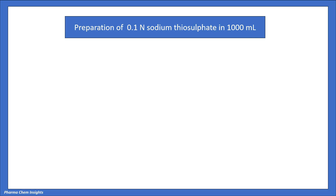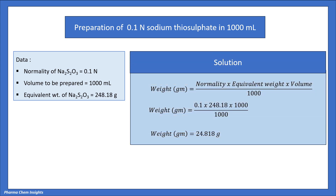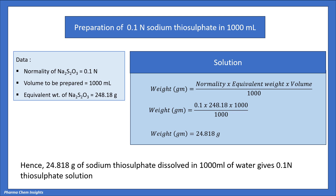Now let us see the calculation to prepare 0.1 normal sodium thiosulfate in 1000 ml. The formula is: weight in grams = normality × equivalent weight × volume / 1000. Putting in the values: 0.1 × 248.18 × 1000 / 1000 = 24.818 grams. Hence, 24.818 grams of sodium thiosulfate dissolved in 1000 ml of water gives 0.1 normal sodium thiosulfate solution.